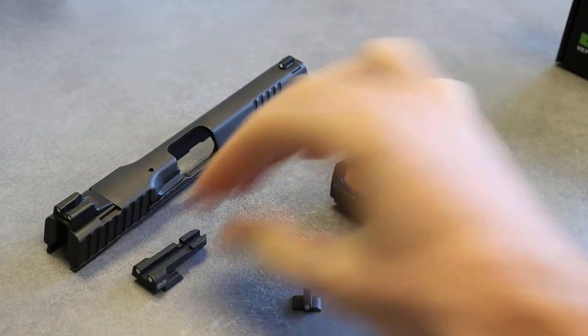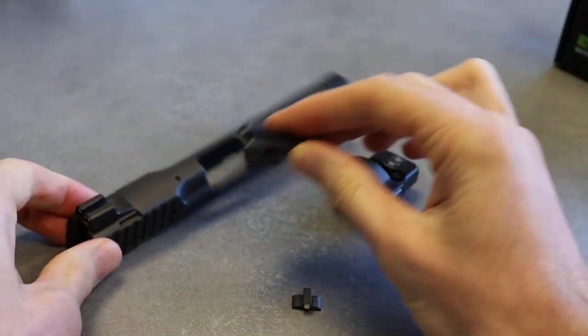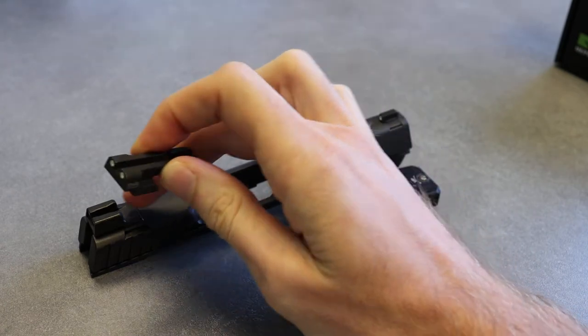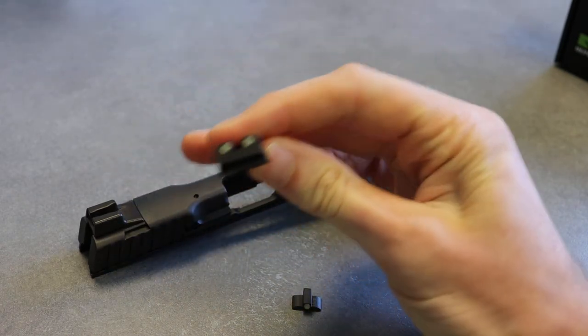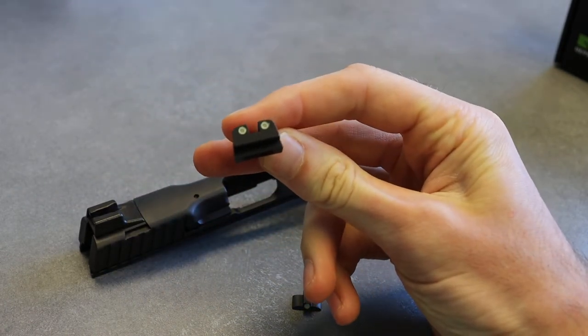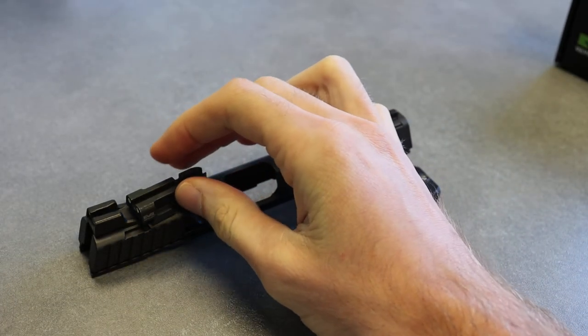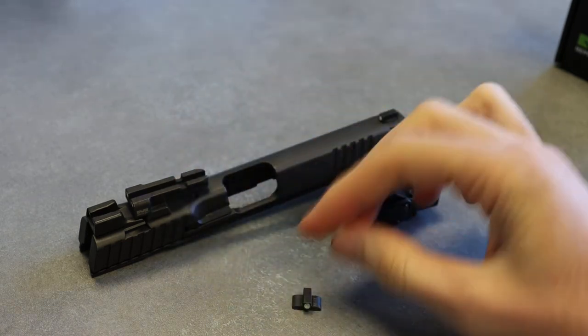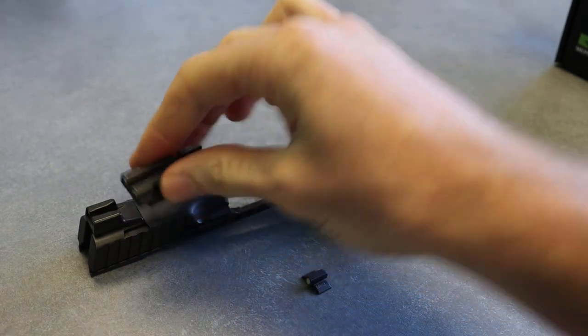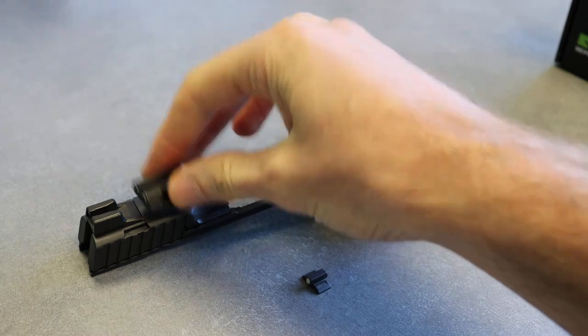Just like with any other micro RDS, you would replace your old sights with these. We have green tritium front and rear. For all of our micro RDSs we use green tritium because it's the brightest tritium available. You'd pop off your old sight and put these on.